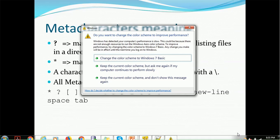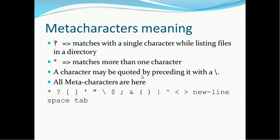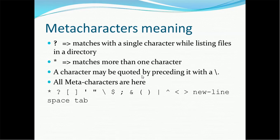If you don't know the beginning of the file you can just put the asterisk sign and it will match any characters. A character may be quoted by preceding it with a backslash. If you want to print a dollar sign, a question mark, or an asterisk sign, it will not print as-is unless you use a backslash before it, because these characters have special meaning in Unix.